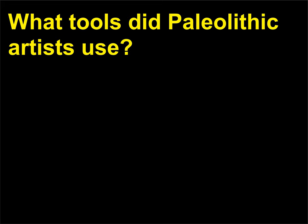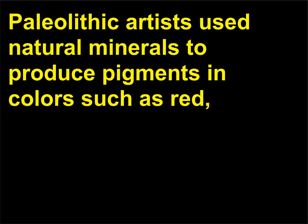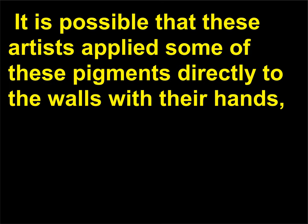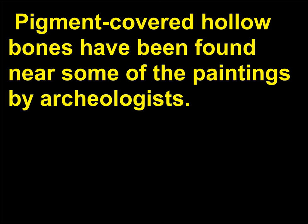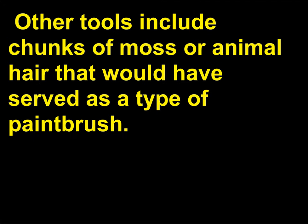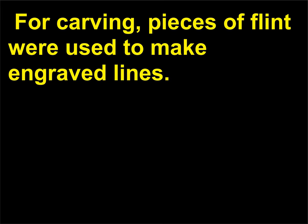What tools did Palaeolithic artists use? Palaeolithic artists used natural minerals to produce pigments in colors such as red ochre, black, and brown. It is possible that these artists applied some of these pigments directly to the walls with their hands, but hollowed bones were likely used to spray paint onto the walls. Pigment-covered hollow bones have been found near some of the paintings by archaeologists. Other tools include chunks of moss or animal hair that would have served as a type of paintbrush. For carving, pieces of flint were used to make engraved lines.